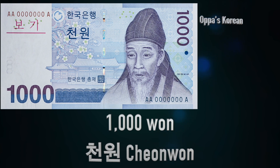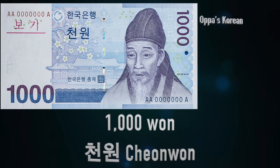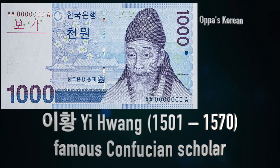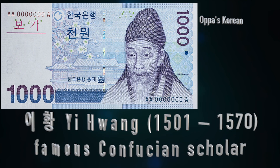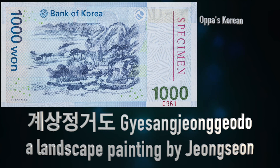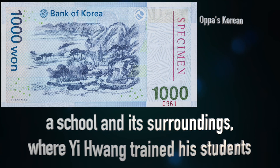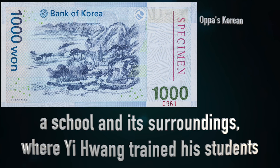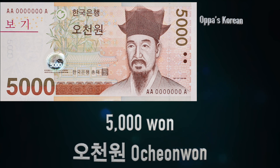This is the smallest bill, 1,000 won. The front of the 1,000 won bill features Lee Hwang. Lee Hwang was a famous Confucian scholar from the Joseon dynasty. The back of the bill is 계상정거도, a landscape painting by 정선, a famous landscape painter. The painting depicts a school and its surroundings where Lee Hwang trained his students.